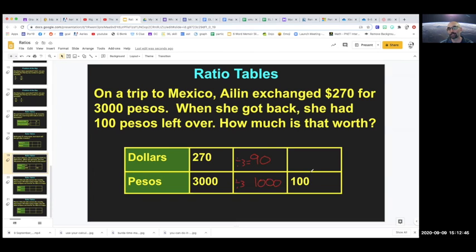So then I have to divide this by three also. 3,000 divided by three, well, that's easy. That's 1,000. That still doesn't get me to 100, but it gets me closer. So now I can divide, what can I divide by from 1,000 to get to 100? Oh, divide by 10. So here, to get to 100, I divide by 10. So that means here, I also have to divide by 10. Divide by 10. And that's easy. 9 divided by 10 is 9. So that means if she has 100 pesos, it's worth $9. Got it? Cool.